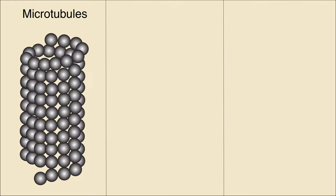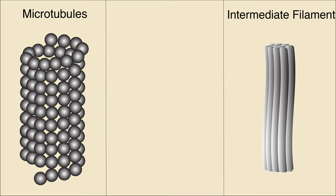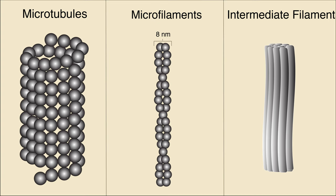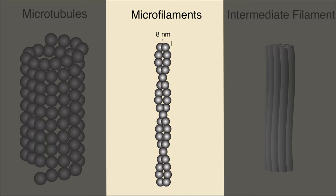There are three main types of cytoskeletal filaments: microtubules, intermediate filaments, and microfilaments made of actin. Today, we will focus on microfilaments, the thinnest of the three with an average diameter of 8 nanometers.